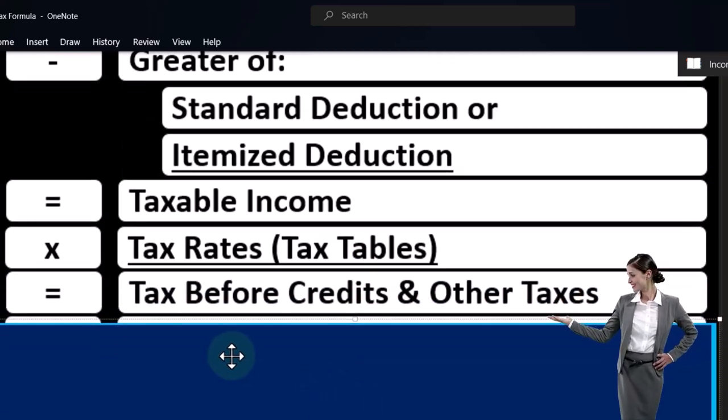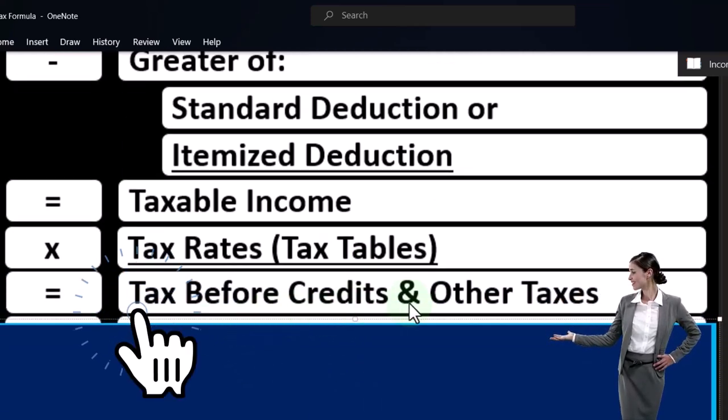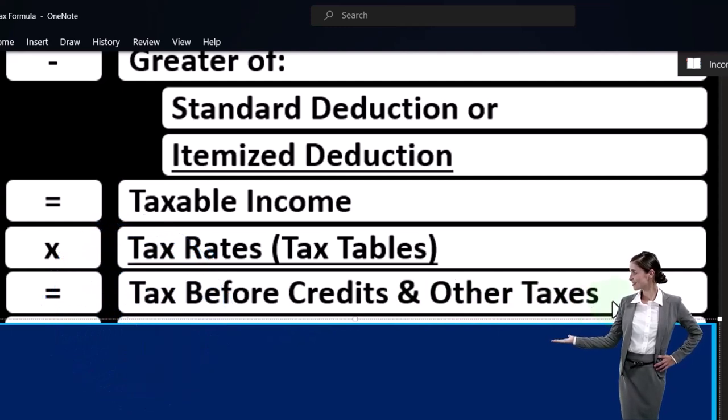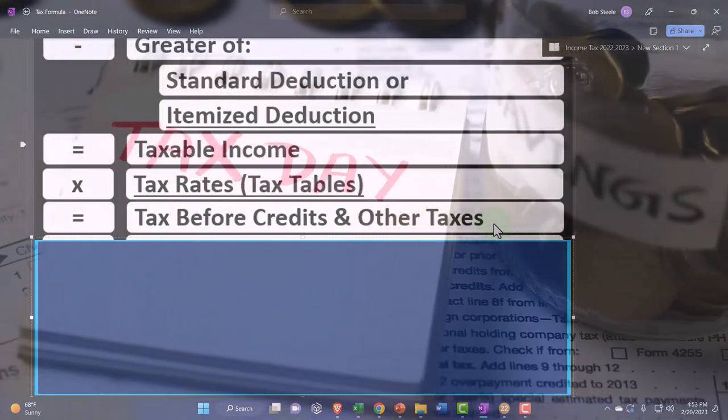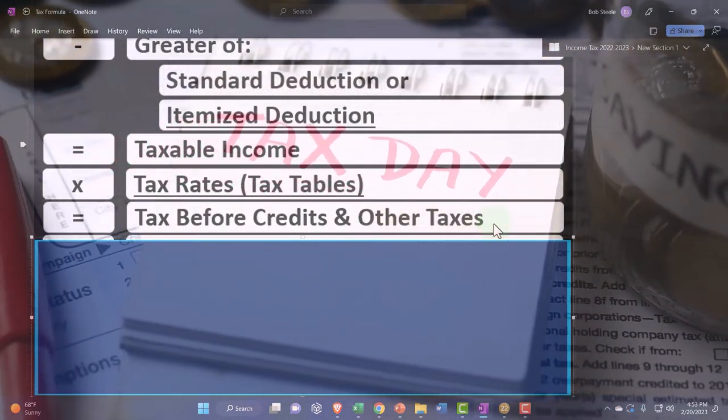Then we got the tax before credits and other taxes. So you might think this is the bottom line, this is it, there's the calculation of the taxes. But no, for a couple reasons. One is because on the income tax system, it's a pay-as-you-go type of system.